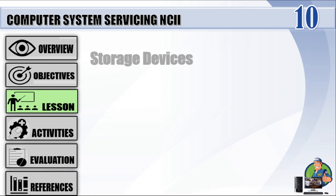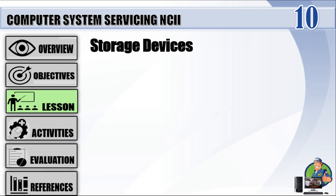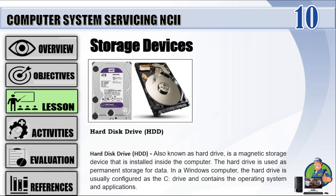Hard Disk Drive (HDD), also known as hard drive, is a magnetic storage device installed inside the computer. The hard drive is used as permanent storage for data. In a Windows computer, the hard drive is usually configured as the C drive and contains the operating system and applications.